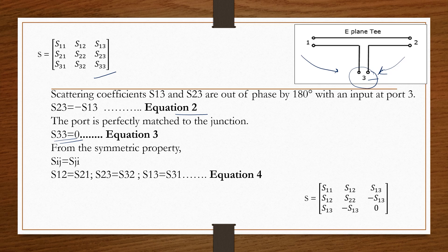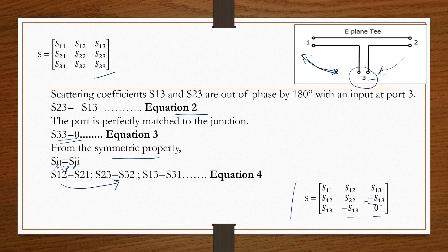The third important property of the scattering matrix is the symmetric property. In symmetric property, Sij equals Sji — where i is input and j is output. So S12 equals S21, S23 equals S32, and S13 equals S31. Applying symmetry and substituting the out-of-phase condition, the matrix becomes: S11, S12, S13; S12, S22, minus S13; S13, minus S13, 0. Where there is an out-of-phase condition, we place a minus sign.